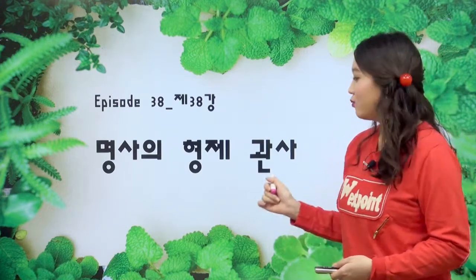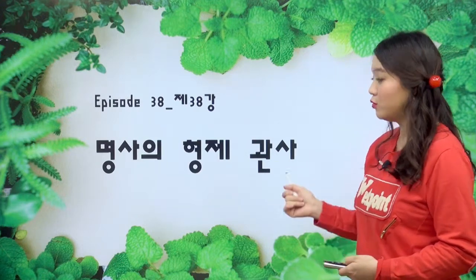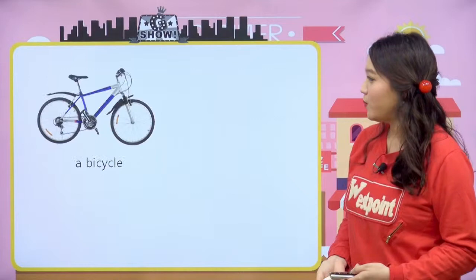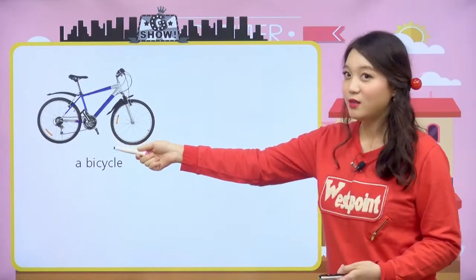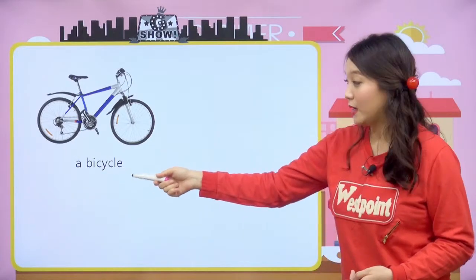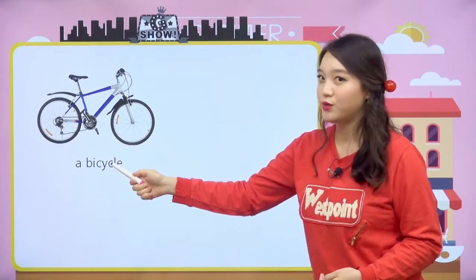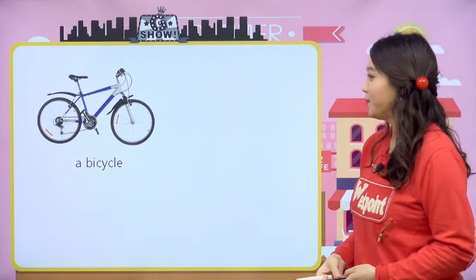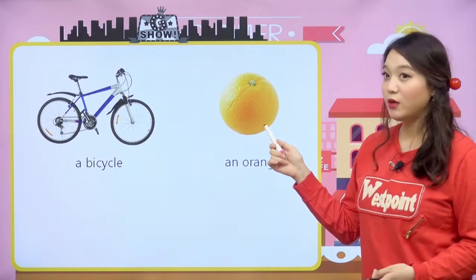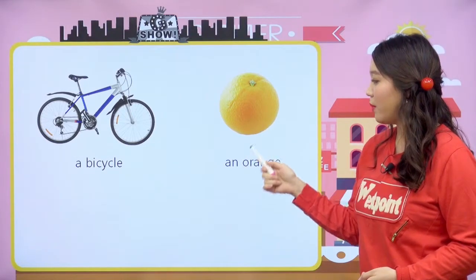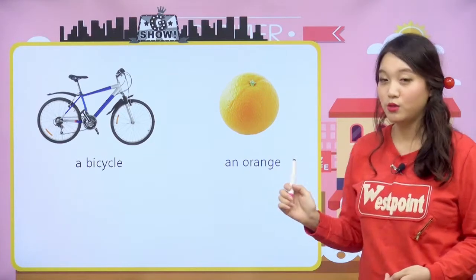우리 친구들 관사라는 말 들어본 적 있어요? 관사가 무엇인지 한번 살펴보도록 할게요. 자, 이거 뭐예요? 자전거죠? 자전거는 영어로 bicycle이고, 자전거 한 대가 있으니까 a bicycle이라고 말할 수 있겠네요. 오렌지는 한 개 있으니까 an orange 이렇게 이야기를 한다고 했어요.